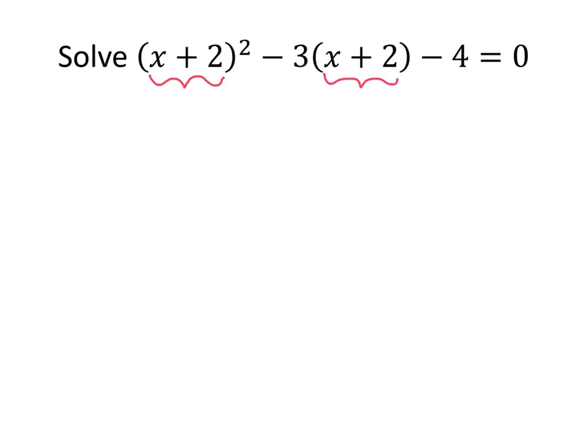So the trick that we're going to do to solve this equation—now we don't have to use this trick. What we could do is just multiply out x plus 2 squared, multiply all this out, collect all our like terms, factor, and do all that stuff. But it's going to turn out that this problem is a lot easier than that by using this trick.